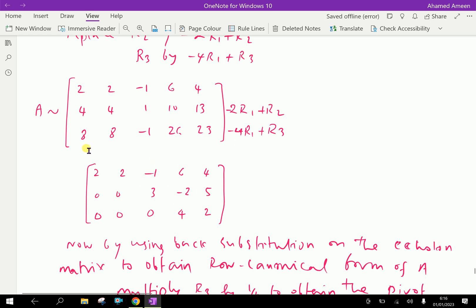Look at the third row operation: minus 4R1 plus R3. Minus 4 into 2 is minus 8, and plus 8 is 0. Like this, minus 8 plus 8 is 0. Minus 4R1 is 4, and minus 4R1 plus R3.